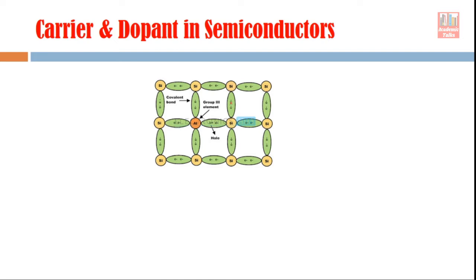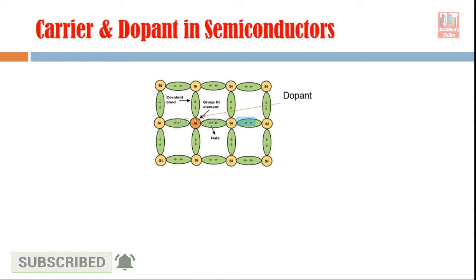In semiconductors, if we take the example of a silicon semiconductor, we have silicon atoms bonded with each other. If we have a dopant here — suppose aluminum is a dopant — it has replaced one silicon atom. Because aluminum is a p-type impurity, it introduces a hole here. This dopant has introduced one hole, or you can say a vacancy is created, and this hole acts as a carrier. This is an example of a p-type silicon semiconductor.